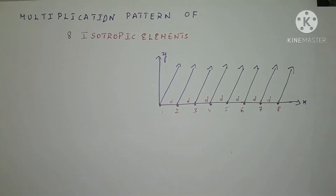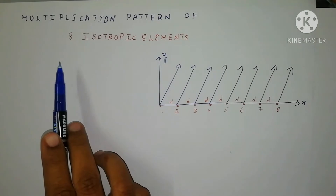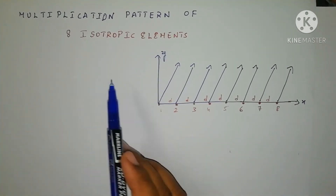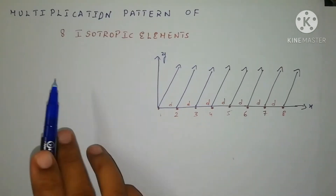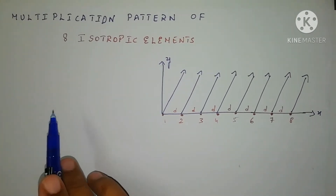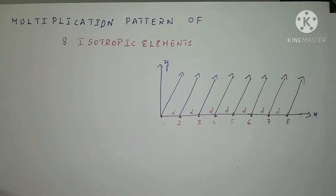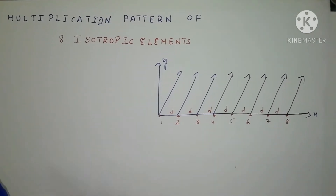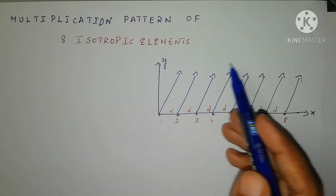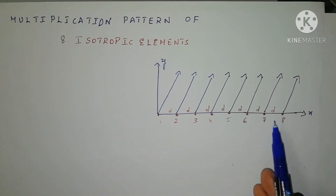Hello viewers, now I am going to give the continuation class for multiplication pattern for isotropic elements. In the previous class I explained how we draw the radiation pattern for four isotropic elements, and now we will proceed with eight isotropic elements. Let us consider an array having eight isotropic elements.